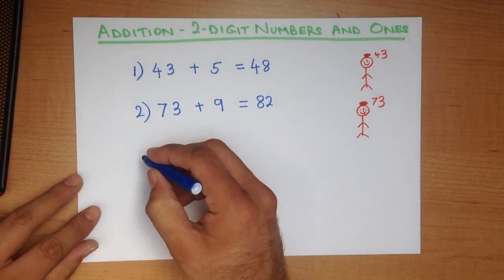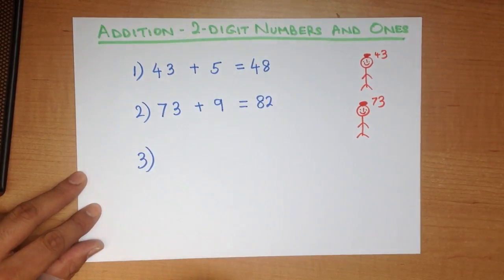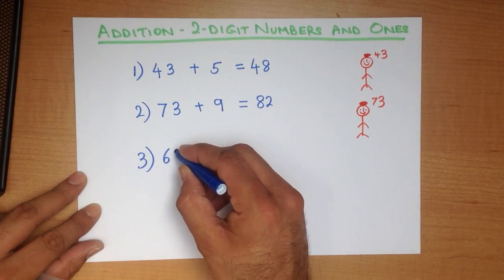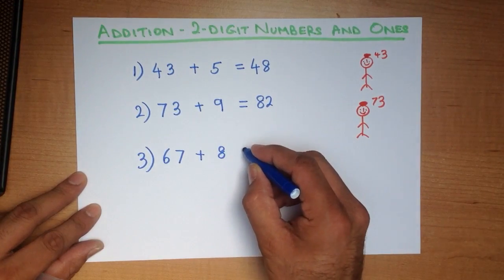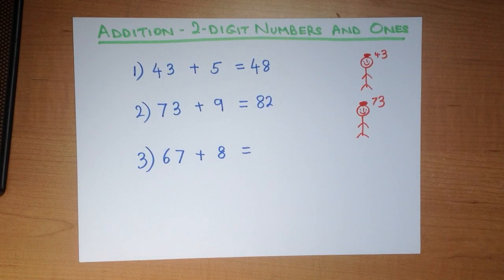Let's try one final example. What is 67 plus 8?